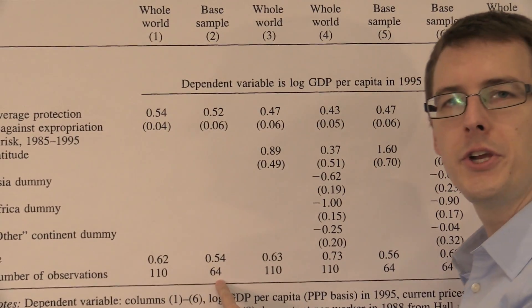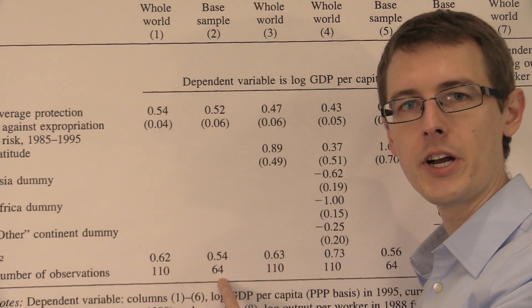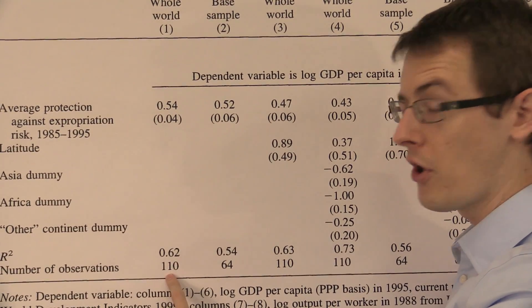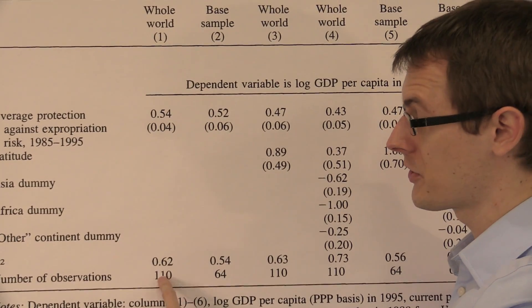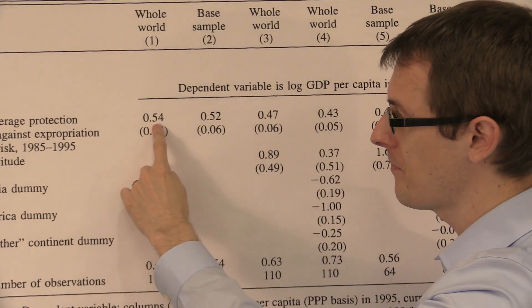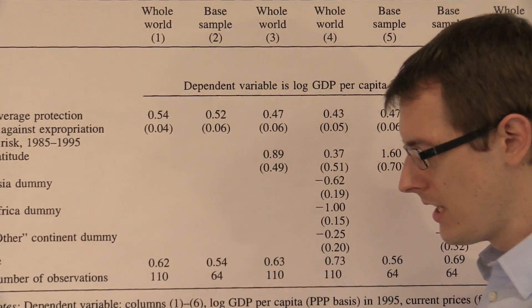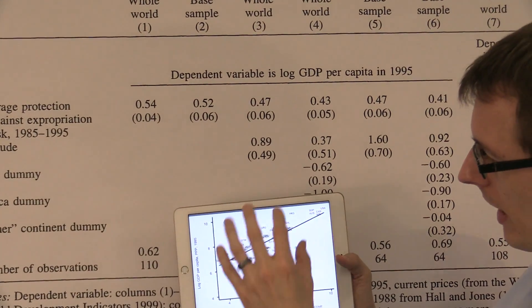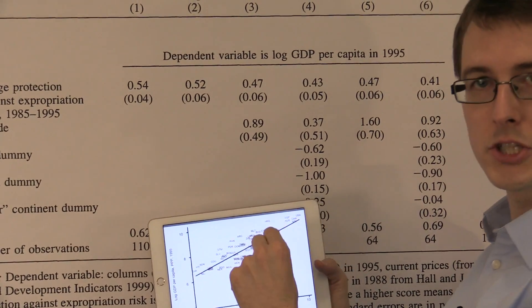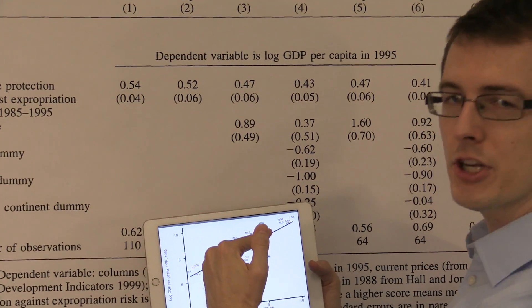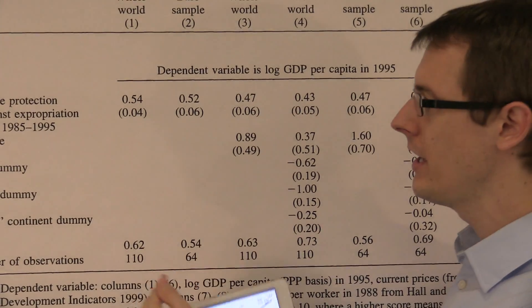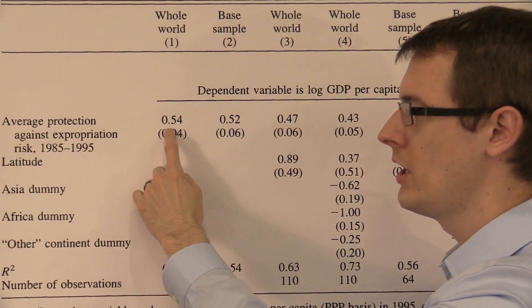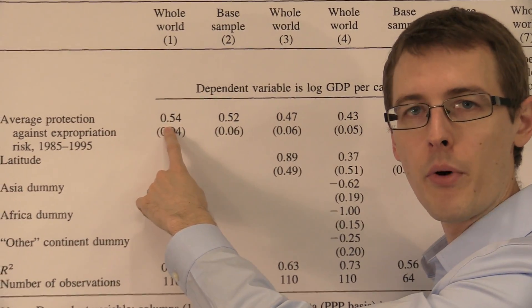In this specification, we're only using 64 countries in the world. If you use all the countries — or almost all of them, 110 — we're going to get a slightly different line. If we put more dots in with more countries, the line changes a little bit, but it only changes from a slope of 0.52 to 0.54.